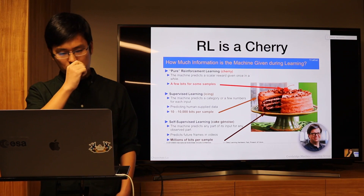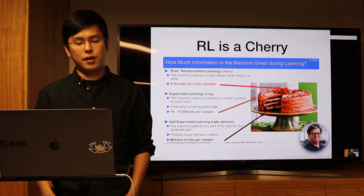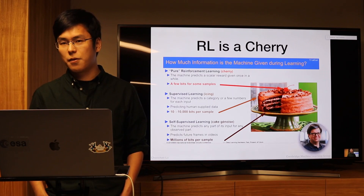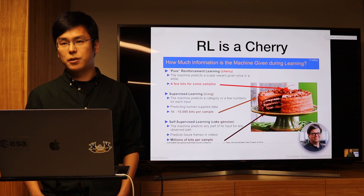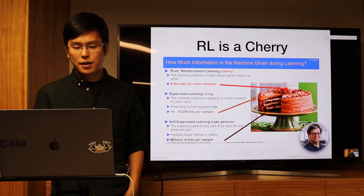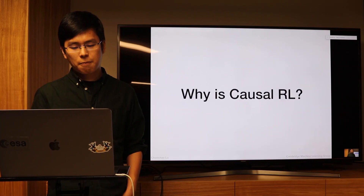LeCun uses a famous metaphor: reinforcement learning is the cherry on the cake, because it contains very little information compared to supervised or self-supervised learning. In RL, the only information you get is a reward — a human-designed scalar that is hard to contain all information about a task. That's why RL is hard to work in the real world.